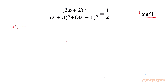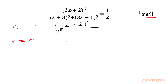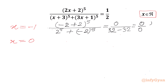I will check our equation at x equal to negative 1 and at x equal to 0. Let's put x equal to negative 1. So we will get (−2+2)^5 in the numerator over (−1+3) = 2. So 2^5 + (−3+1)^5 = (−2)^5 gives us 0 over 2^5 − 2^5, which is 32 − 32. So we are getting 0 over 0, which is indeterminate form. So x cannot be equal to negative 1 for our given equation.